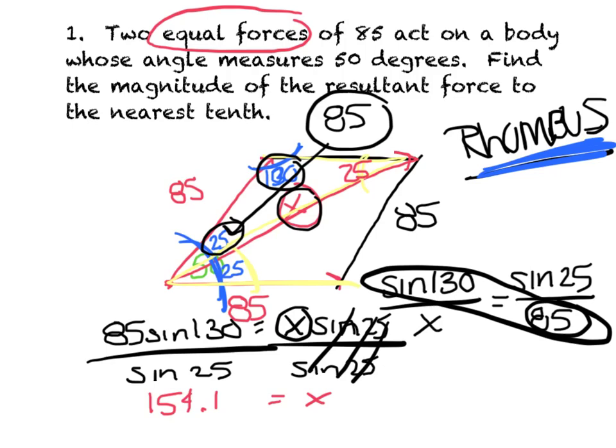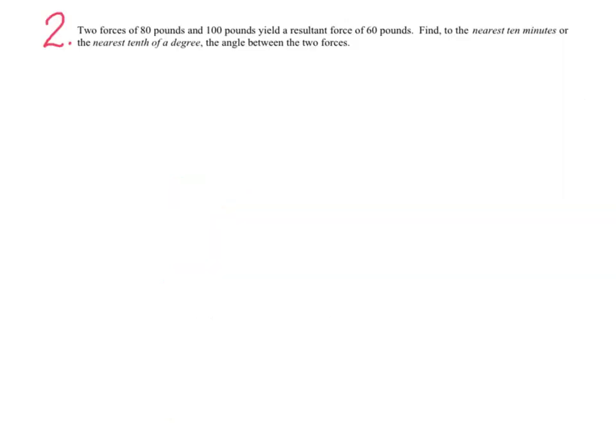Let's try another. Number 2. Two forces of 80 pounds and 100 pounds yield a resultant force of 60 pounds. So let's just stop right there and get our picture drawn. Notice the pounds are different lengths, 80 and 100, so we're back to a parallelogram. So I'm going to label that. I'm going to go with 100 here and 80 here.